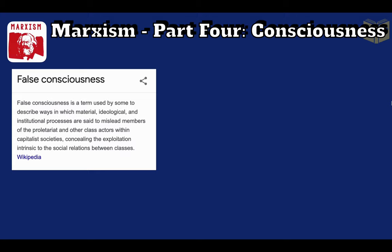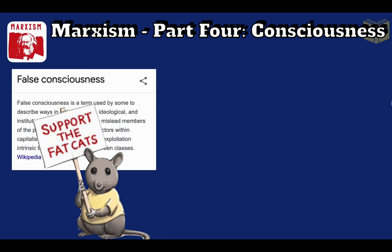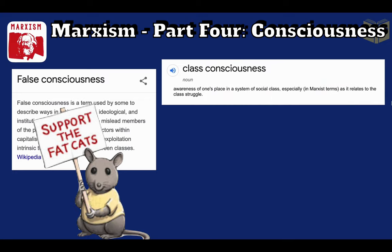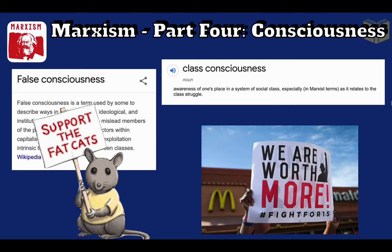False consciousness is people's inability to see exploitation or oppression because the ruling class's ideology has made them see the world in a way which maintains such structures. Poor marginalised people believing they can be just like Jeff Bezos if they work hard is technically an example of this. Class consciousness, on the other hand, is where the classes become aware of the reality of the oppression and exploitation they face. This might, but not always, lead to revolution.